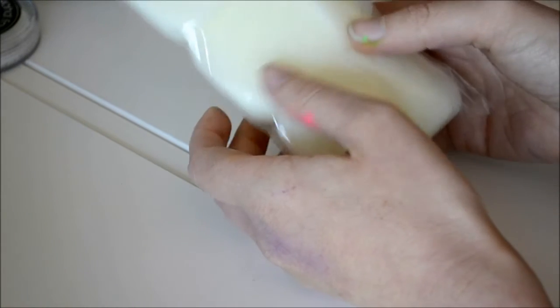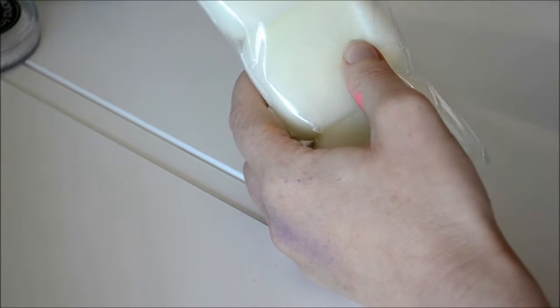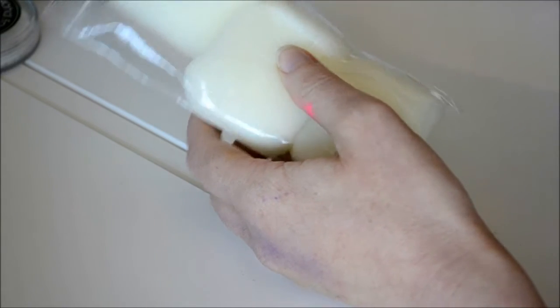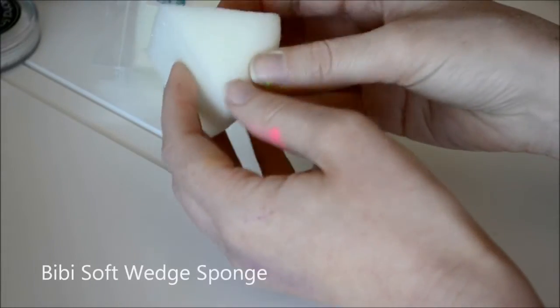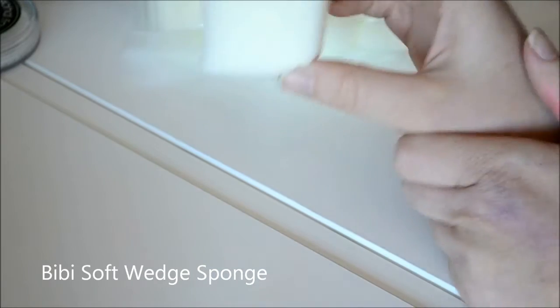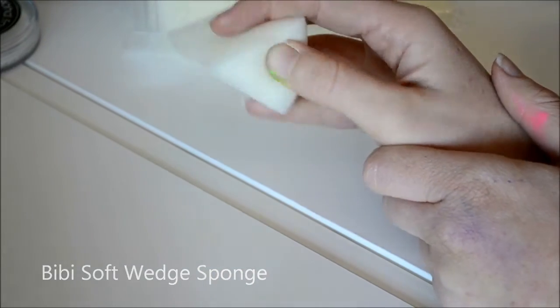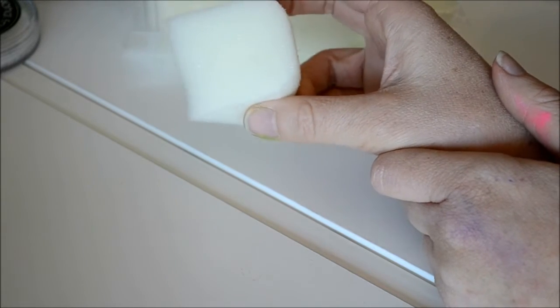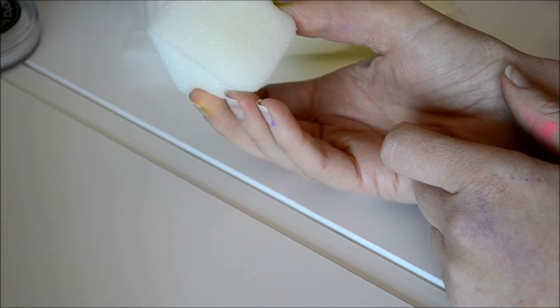Then I also purchased these sponges, which are called Bibi Soft Wedge Sponges. I think these are used by Jenny Saunders here in Australia. They're really, really soft, and I haven't used them yet, so I'm just going to give them a go and see the density.